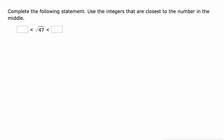Complete the following statement using the integers that are closest to the number in the middle. And we're supposed to choose numbers that are like consecutive integers as well. So I know that 7 squared is 49, and that's really close to 47. Okay, so if I go one below that, one integer below that to 6, 6 squared is 36.